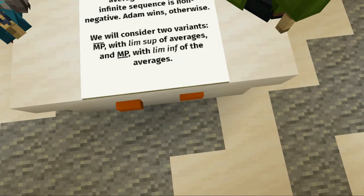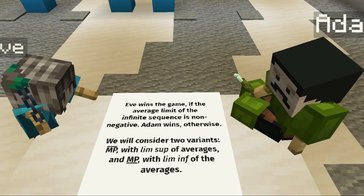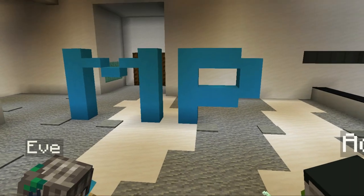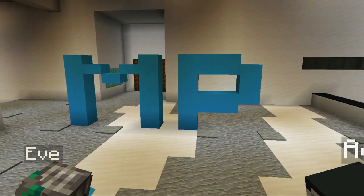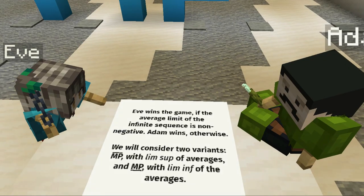Another well-known objective is mean payoff which we denote by MP and it says that Eve wins the game if the average limit of the infinite sequence is non-negative and again Adam wins otherwise. For mean payoff we consider two variants: MP with limit supremum of the averages, and MP with limit infimum of the averages.